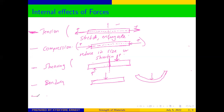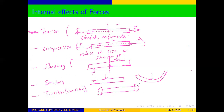The last one we can talk about is torsion, which we can also call twisting. When forces are applied to a body — for example, applying one rotational force in one direction and another rotational force in the opposite direction on the member — the two forces are going to twist the body, which will cause a form of deformation. This is torsion.